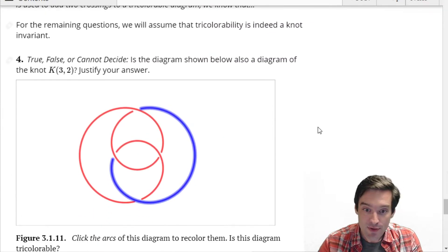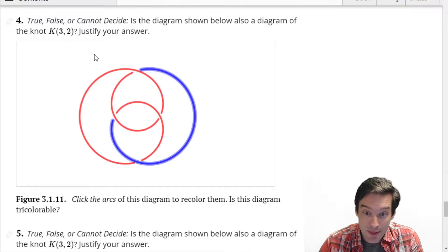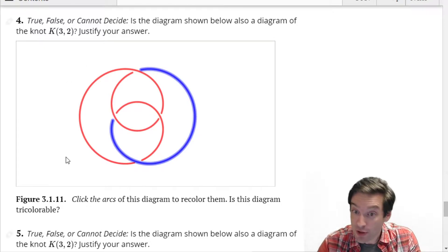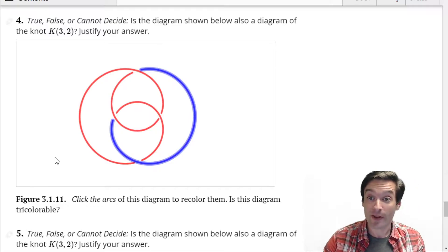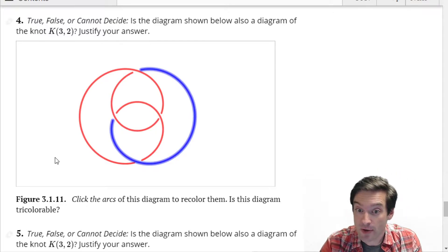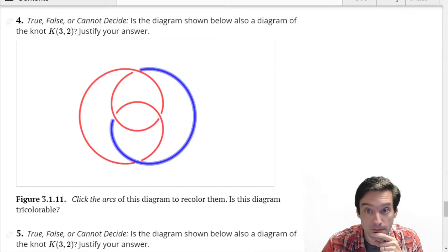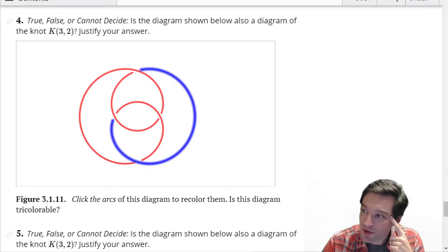So in question four, you were asked to decide whether or not the knot represented by this diagram could conceivably be the trefoil in disguise. What did you figure out about whether this diagram was three colorable? Yeah, so you couldn't find a way to three color this.